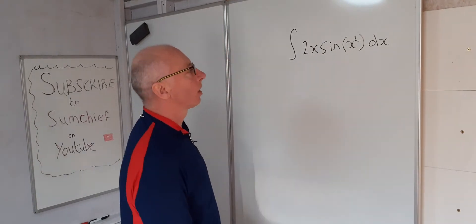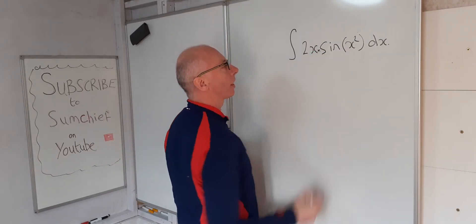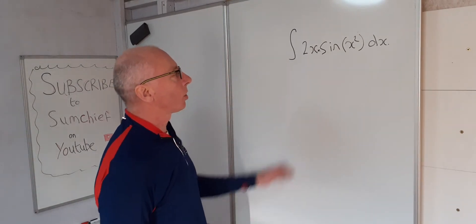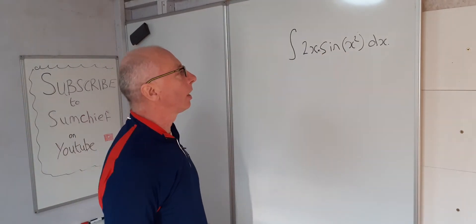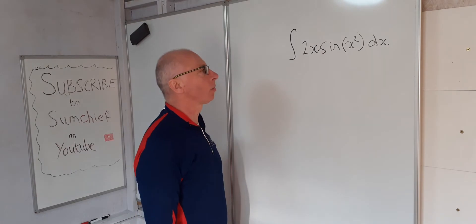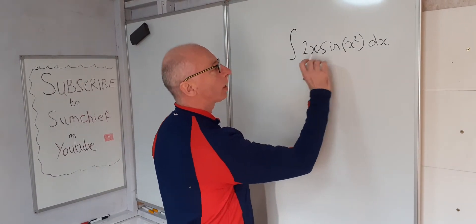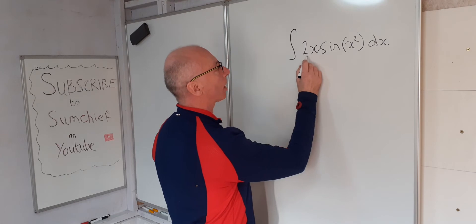Okay, so we need to look at what we're going to do here. We have a multiplication sign here, so we just can't integrate each bit on its own and expect to get the correct answer. What we need to look for here is some sort of relationship between some of the terms.